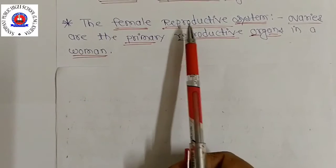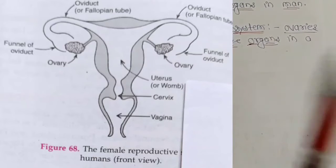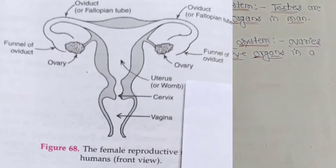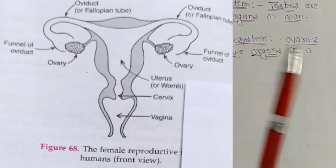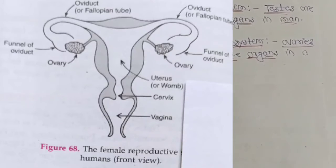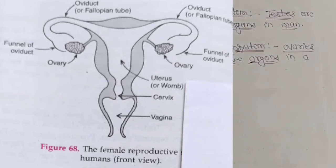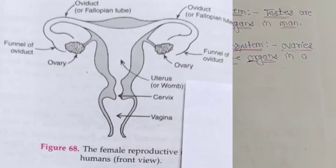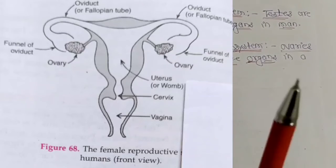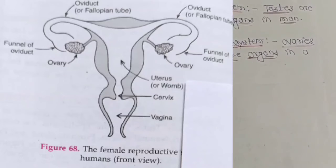The human female reproductive system consists of the following organs: ovaries, oviducts, and uterus. Ovaries are the primary reproductive organs in a woman, just as testes are in a male. They are oval-shaped organs inside the abdominal cavity near the kidneys. A woman has two ovaries. Their function is to make mature female sex cells called ova or eggs, and also to make female sex hormones called estrogen and progesterone.